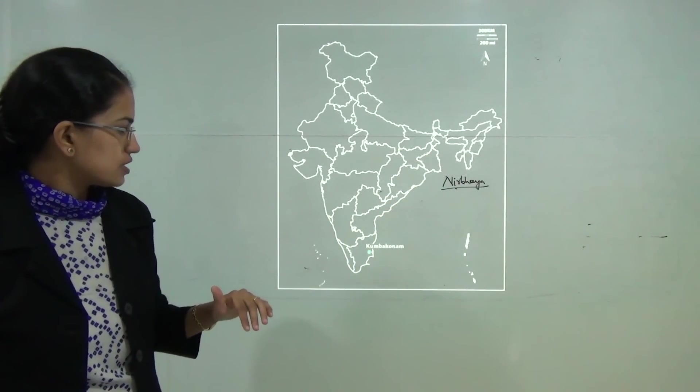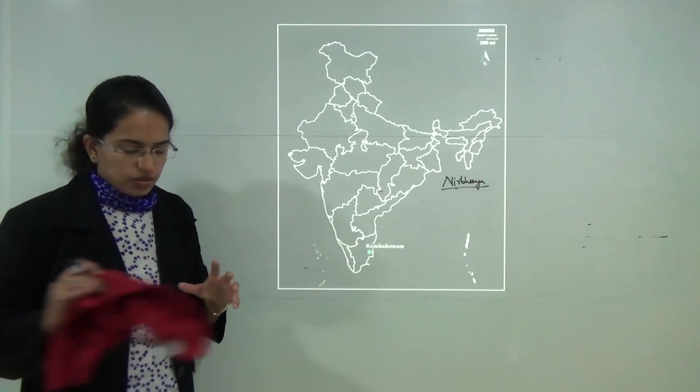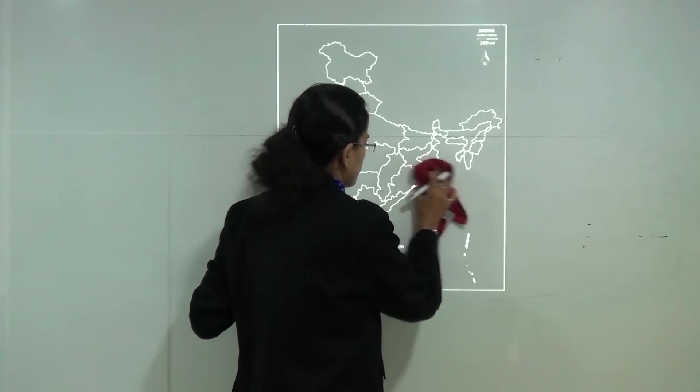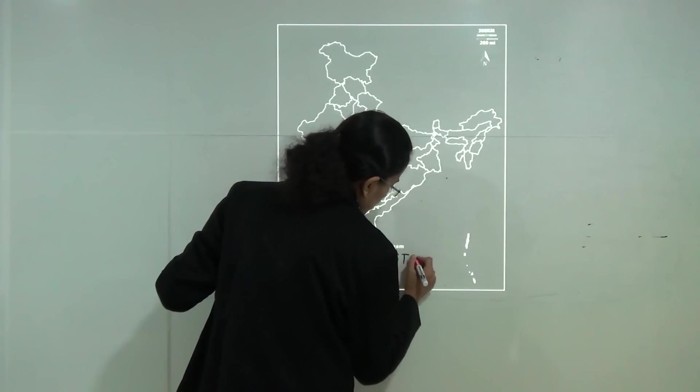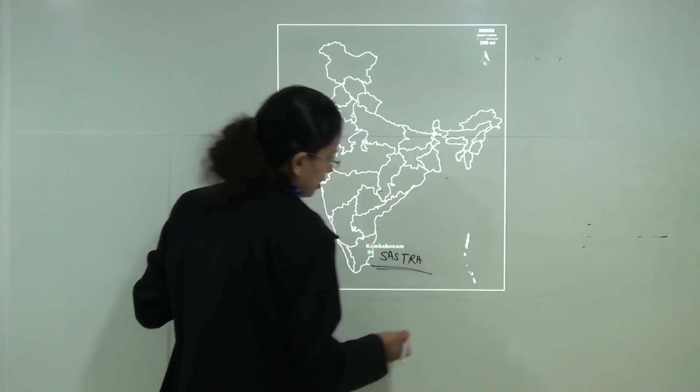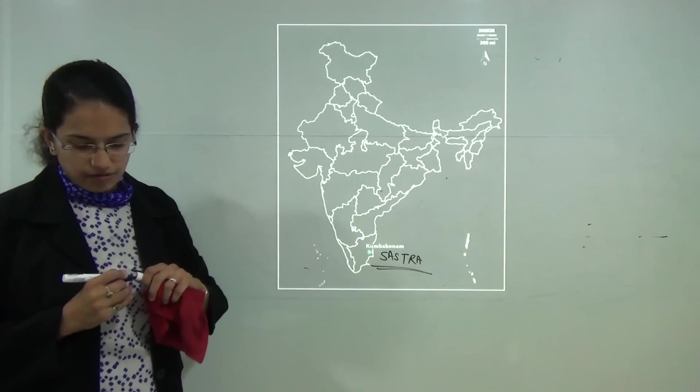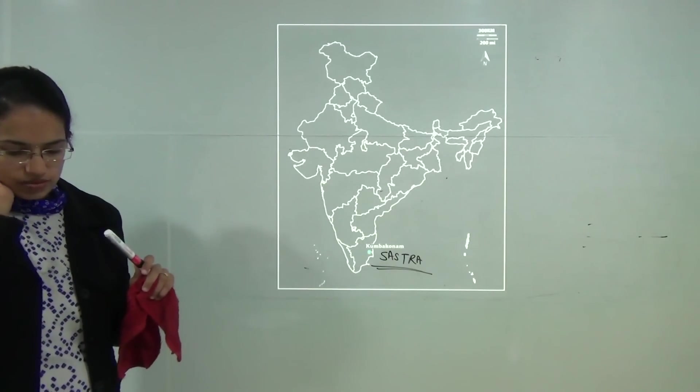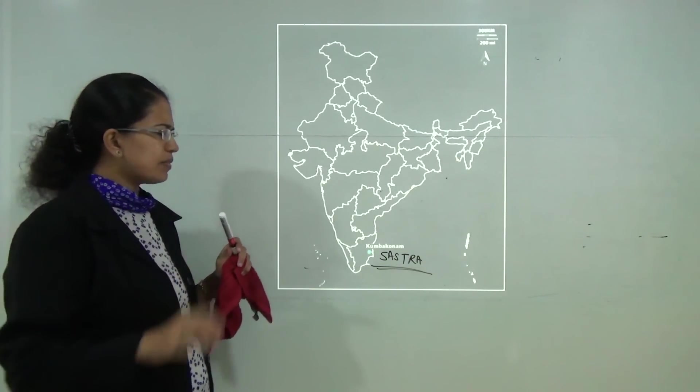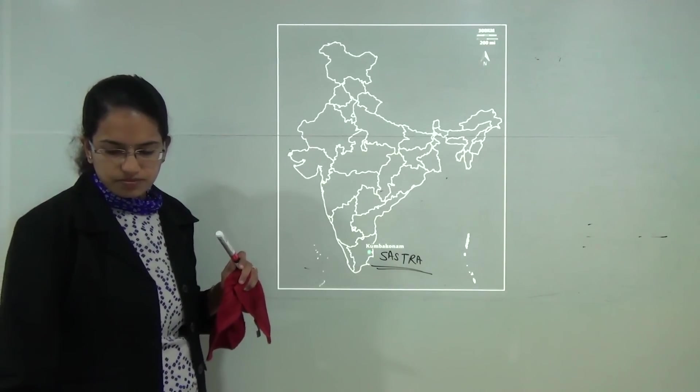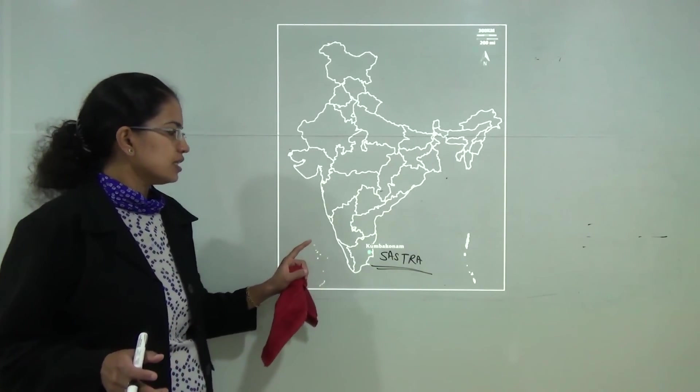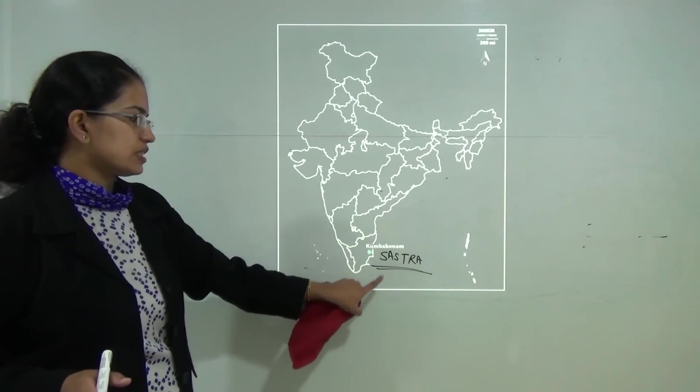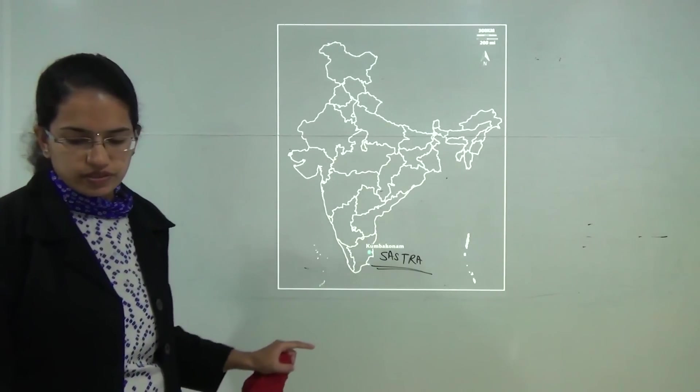The next location is Kumbakonam. Kumbakonam is the location for the Sastra University and this Sastra University awarded the Ramanujan awards for mathematics. This award was given to two scholars, one was Kaisa Matomaki and another was Maksym Radziwill for their outstanding works in mathematics. You have Kumbakonam which is the location for the Sastra University.